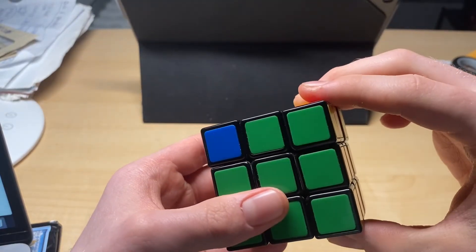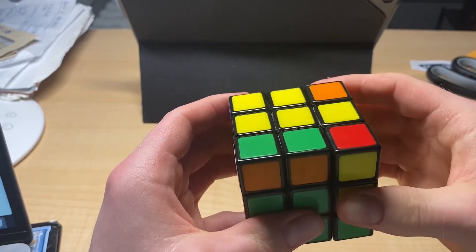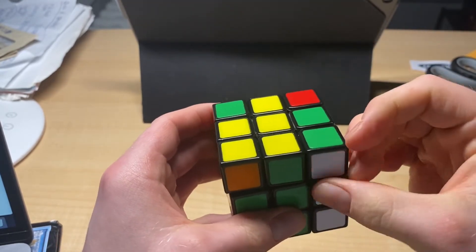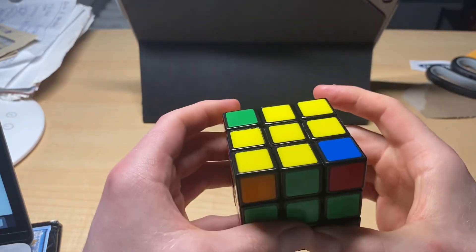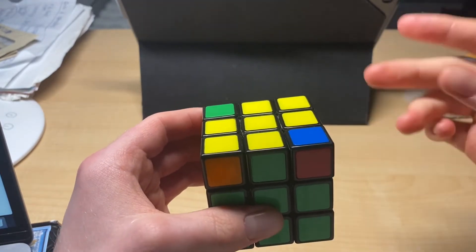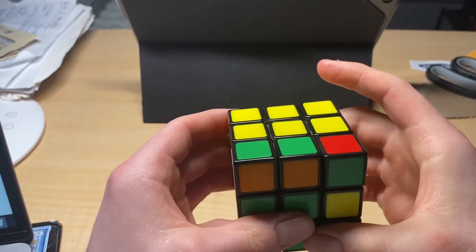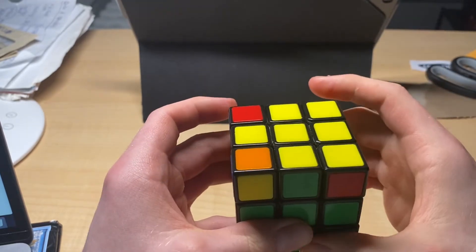It's R, U, R prime, U, R, U2, R prime. Okay. So, we're here. What if we just jumped right into doing it again? R, U, R prime, U, R prime, U, R, U2, R prime.